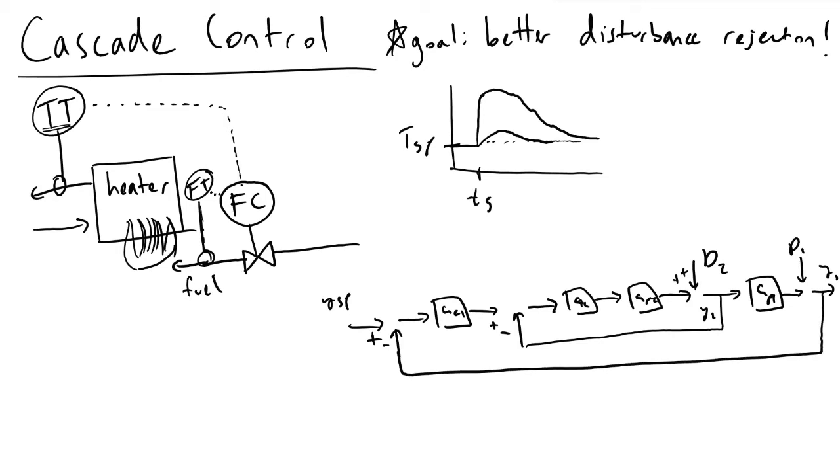The thing to note here is that we can define this kind of inner loop region as a slave loop. It might not be the most politically correct terminology, but what happens is the master loop output, in this case whatever's coming out of gc1, will be the input to the slave. So the master dictates what the slave loop does.